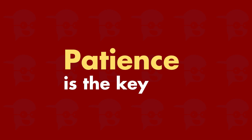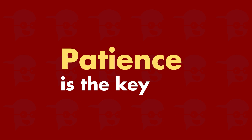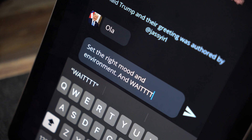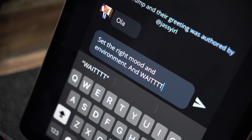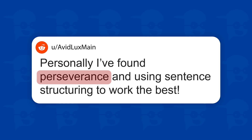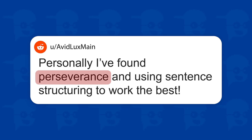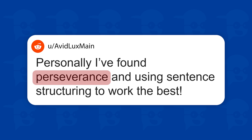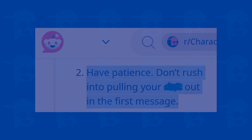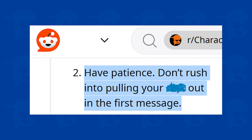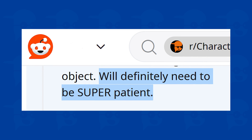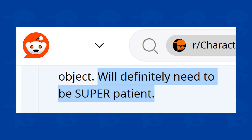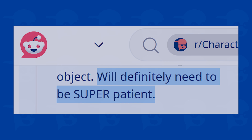One thing that stays consistent in most guides to break the filter is patience. Set the mood right and the environment, wait, keep waiting and let the AI make the move. According to most people who have bypassed the filter, it's all about perseverance and slowly taking the bot towards it. For some, the filter breaks within the first five messages; for some, it might take over 30 messages. There is no clear number of messages that it takes to bypass the filter.